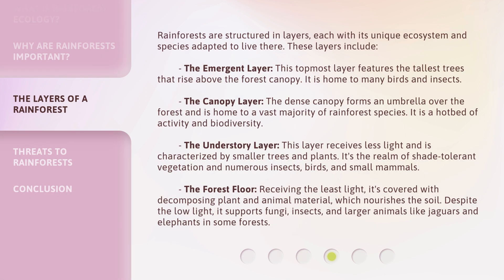Rainforests are structured in layers, each with its unique ecosystem and species adapted to live there. These layers include: the emergent layer, this topmost layer features the tallest trees that rise above the forest canopy and is home to many birds and insects. The canopy layer, the dense canopy forms an umbrella over the forest and is home to a vast majority of rainforest species — it is a hotbed of activity and biodiversity. The understory layer receives less light and is characterized by smaller trees and plants — it's the realm of shade-tolerant vegetation and numerous insects, birds, and small mammals.